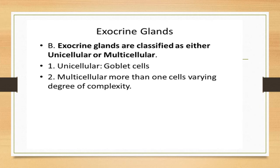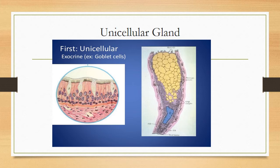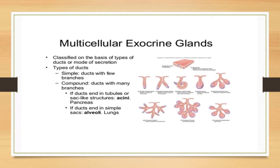Exocrine glands are classified as either unicellular or multicellular. The unicellular exocrine gland example is the goblet cell. Multicellular exocrine glands are classified on the basis of their duct types — they can be simple or compound. If the gland has a single duct, we call it a simple gland; if the duct branches, we call it a compound gland.